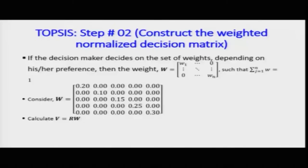Until now we only considered each criterion's values in matrix R on a standalone basis. With weights, we give priority among the criteria themselves. The weights are given by a matrix of size n×n where the principal diagonal holds W1 to Wn and off-diagonal elements are zero. The sum of all weights must equal one — or if given as two hundred, divide by two hundred to normalize back to one.